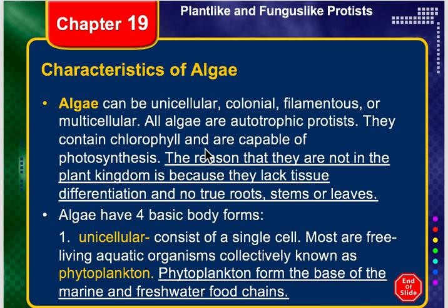Let's get to the algae. Algae can be unicellular, meaning they can be made of one cell. They can be colonial, which means they stick together into long groups. They can be filamentous, like filaments, or they can be multicellular. The multicellular ones are going to be our seaweeds.